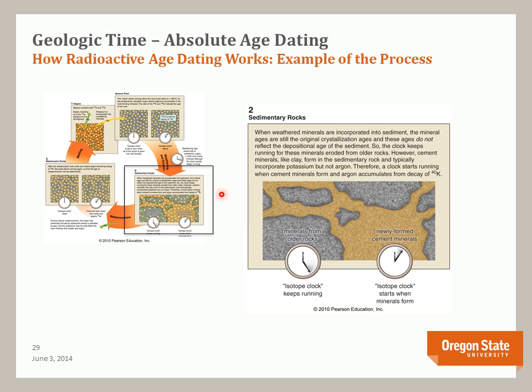In the sedimentary rock process, within minerals from older rocks, the isotopic clock continues to run, changing potassium-argon ratios and recording an age. A new process also occurs — formation of cement minerals binding fragments together — creating a new isotopic clock based on sedimentary processes. By separating the original mineral grains from the cement minerals, we can obtain two ages: the age of crystallization and the age of cementation — which is pretty powerful.